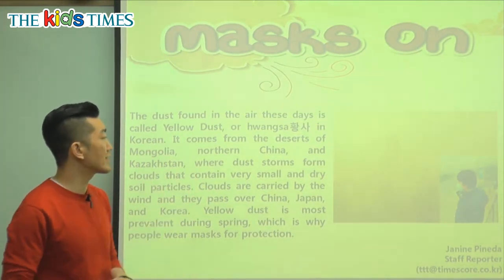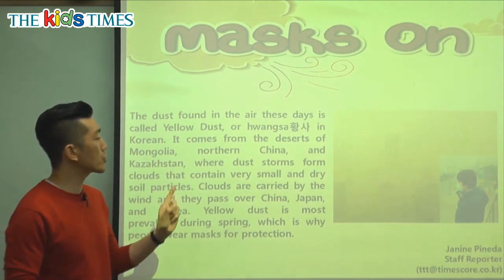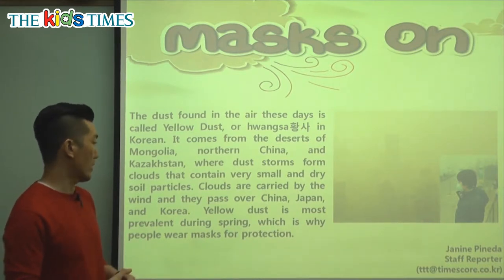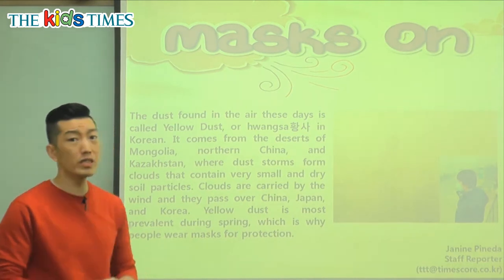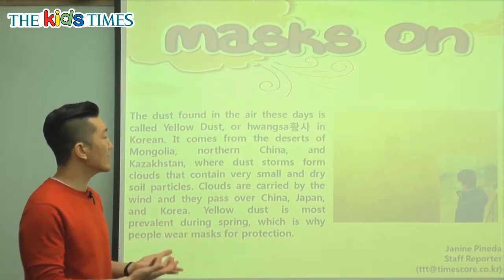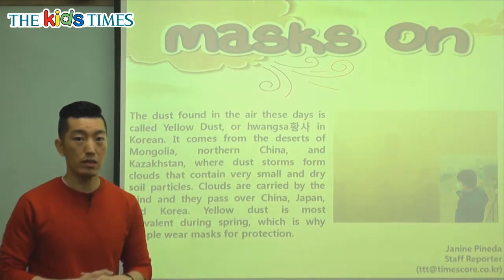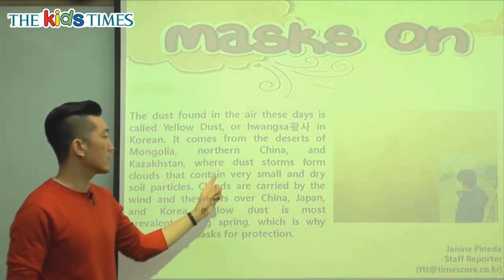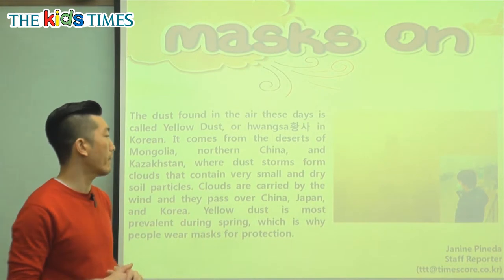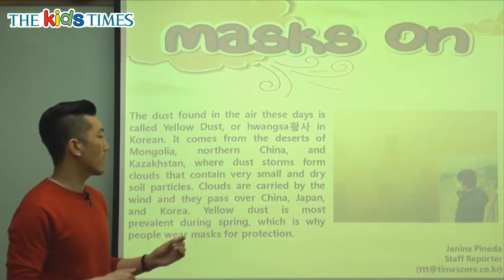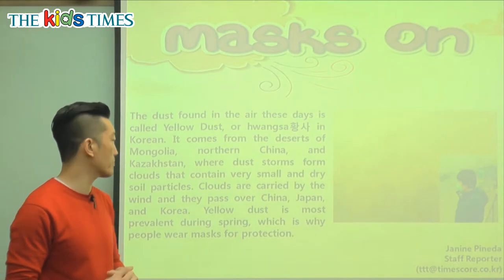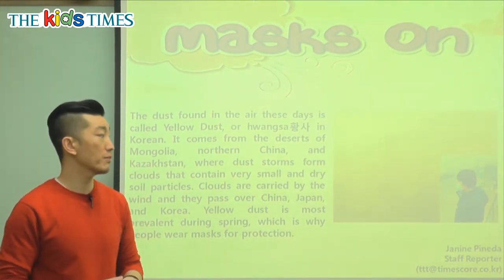So let's see where it comes from. It comes from the deserts of Mongolia, northern China, and Kazakhstan, where dust storms form clouds that contain very small and dry soil particles. We just thought it comes from China, but it comes from northern China, Mongolia, and Kazakhstan. A dust storm is when dust is blown by strong winds and carried very far. These dust storms form clouds that contain very small and dry soil particles — tiny little bits of dirt coming from the earth, the ground.